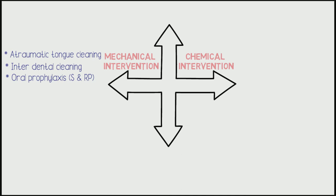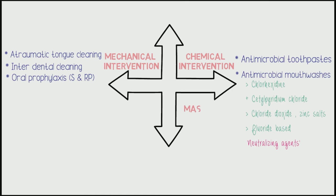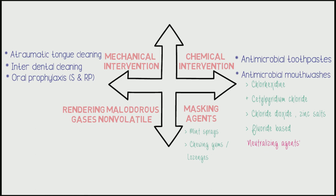Chemical agents include chlorhexidine mouthwash at 0.2% concentration with cetylpyridinium chloride, essential oil mouthwashes, chlorine dioxide, triclosan, fluorides, and hydrogen peroxide, which act as neutralizing agents. Another treatment form is masking malodor using oral mouth sprays, lozenges, and chewing gums. Lastly, rendering malodorous gases non-volatile can be achieved using metal salt-containing dentifrices such as zinc chloride and strontium fluoride. I hope this video was helpful — please like, share, and subscribe to Dentistry Unfiltered.